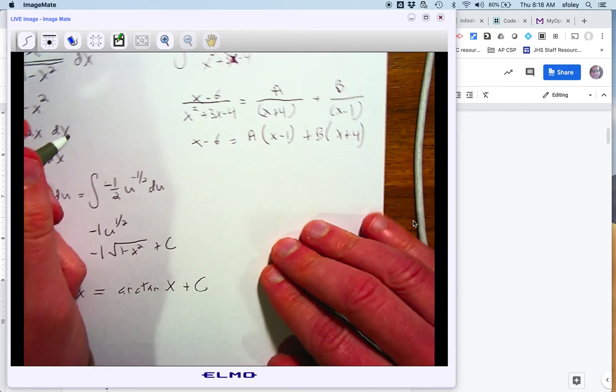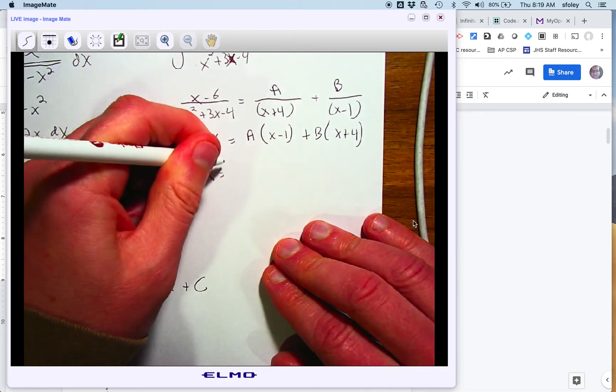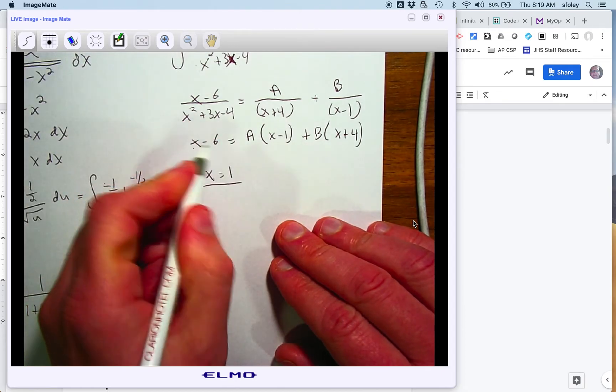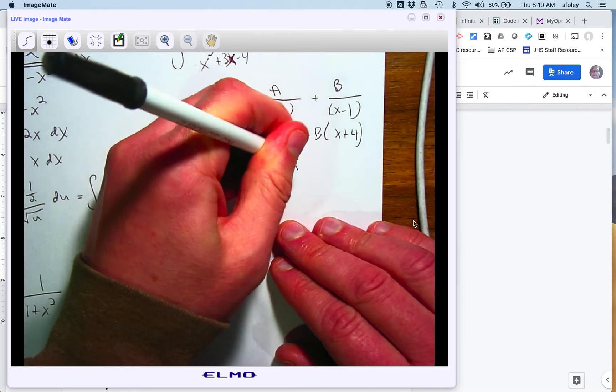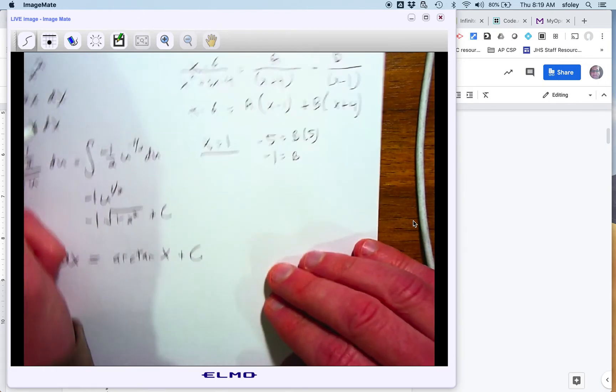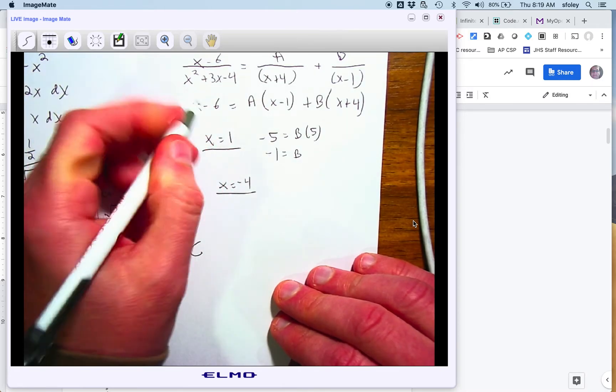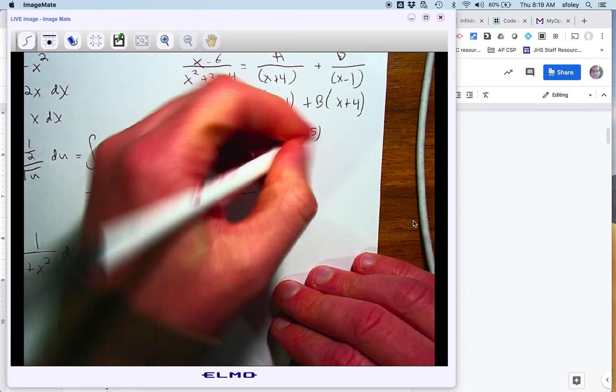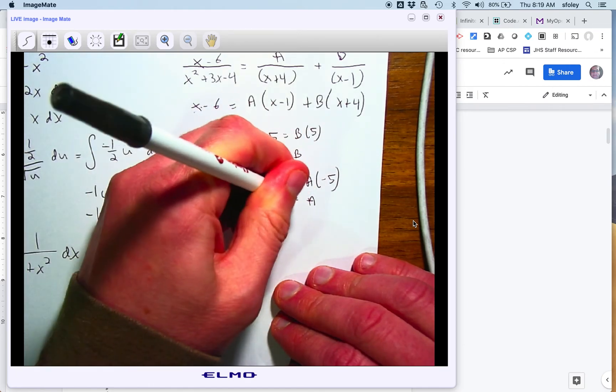Remember, we could do systems of equations, but we're better off just picking a convenient value of x, which would be what makes those factors 0. So if x is 1, the left side is negative 5. The right side is just b times 5. So b equals negative 1. The next x value is negative 4. This will give me negative 10 and a times negative 5. So a equals 2.